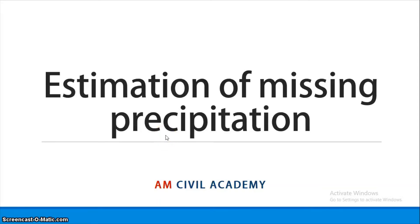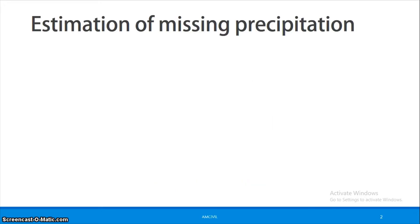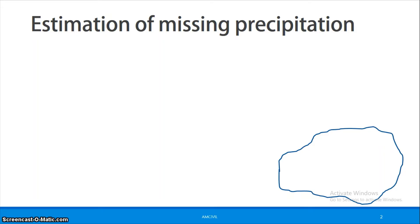Water Resources Engineering: the main topic is Estimation of Missing Precipitation. Precipitation is measured mainly by rainfall using rain gauges in the catchment area. We learned how to install a network of rain gauges and determine the optimum number of rain gauges required.